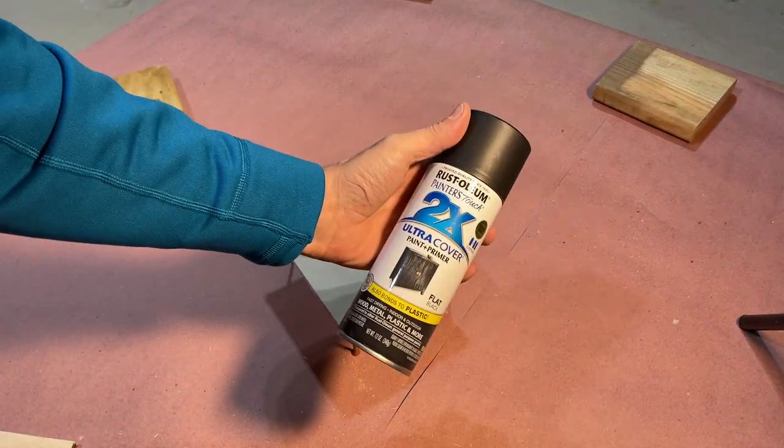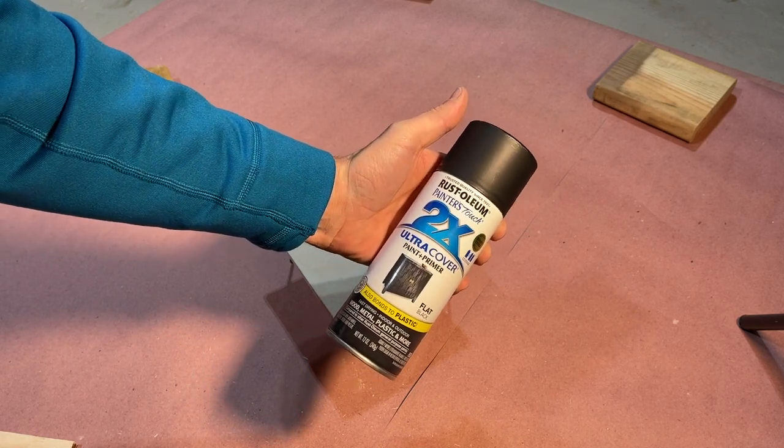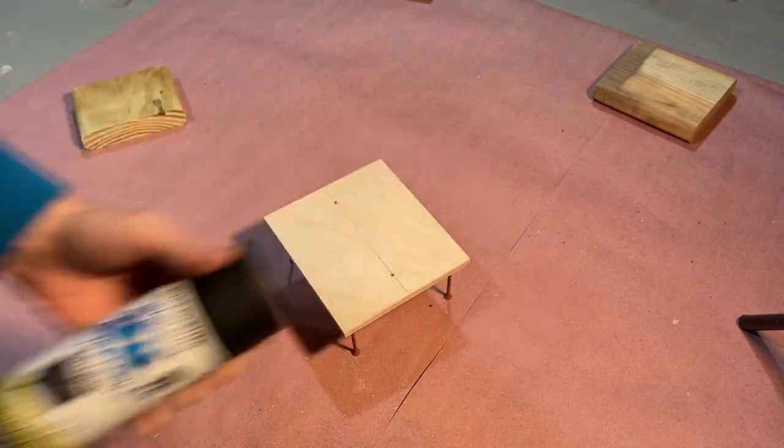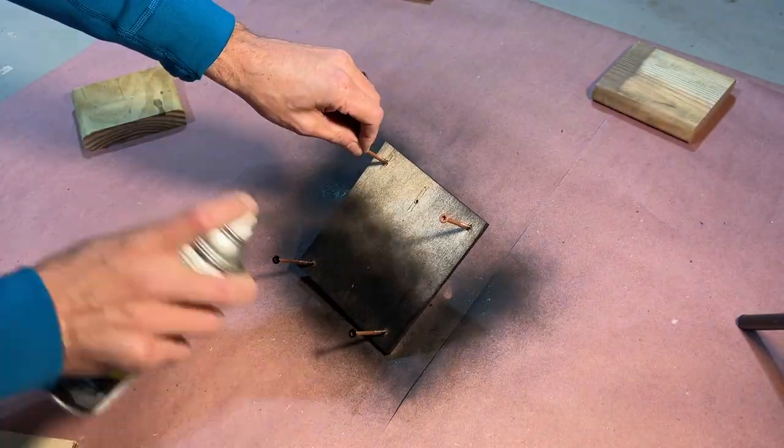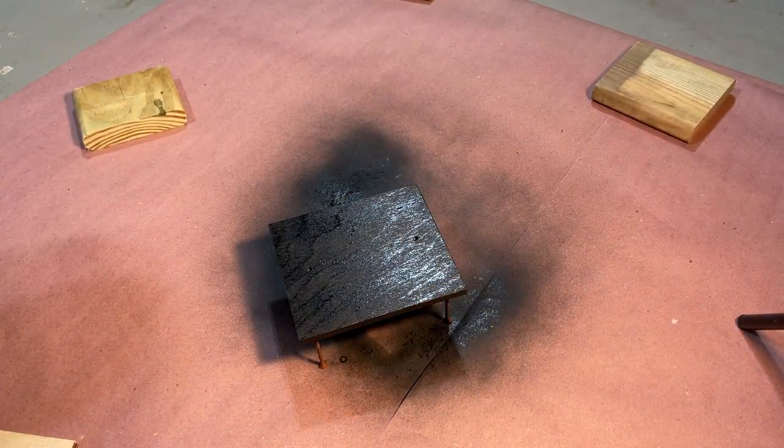Okay, and then I'm just going to use some Rust-Oleum here, some basic paint and primer in one, and the color is flat black. All right, now we'll let that dry.